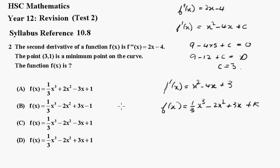But we know the point (3,1) lies on the curve. So we can say that 1 must equal, 3 cubed, 27 divided by 3, it's going to be 9 minus 18 plus 9 plus k. So k is equal to 1.